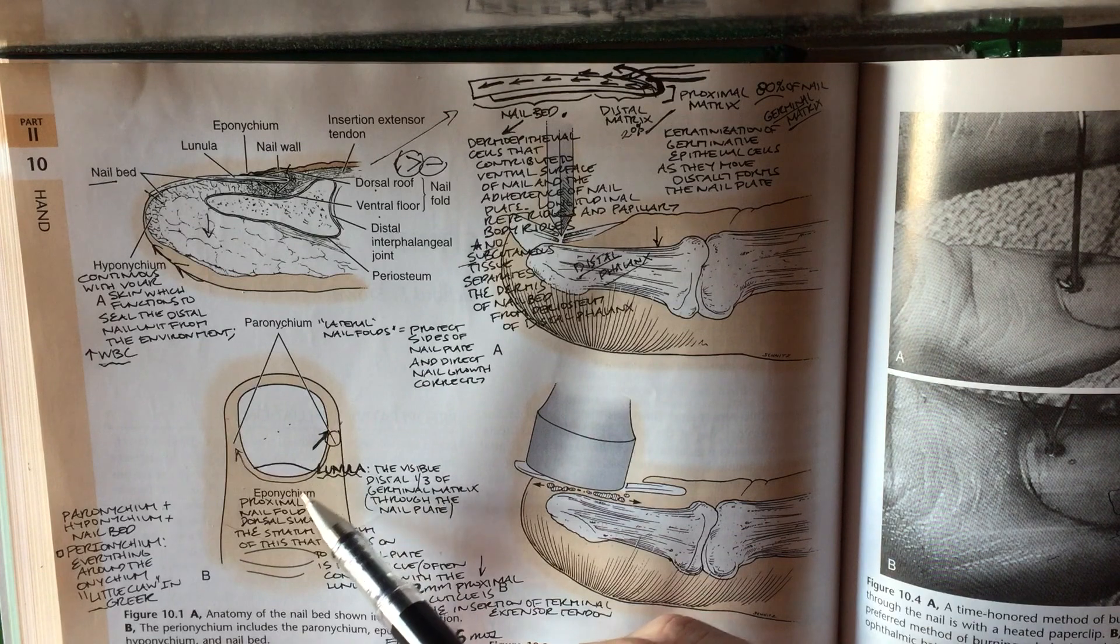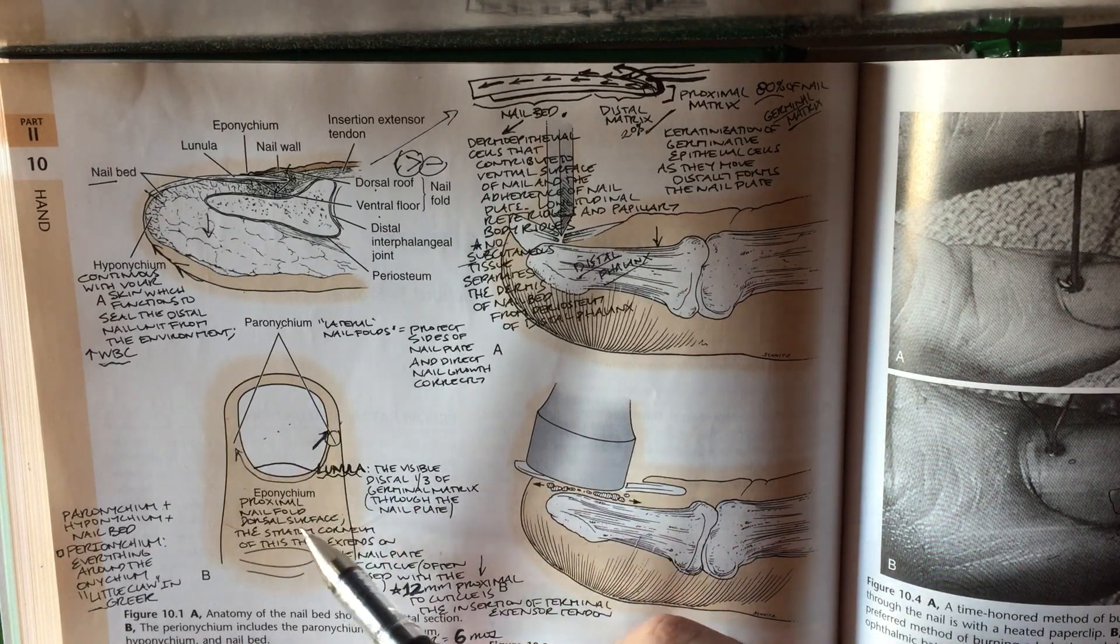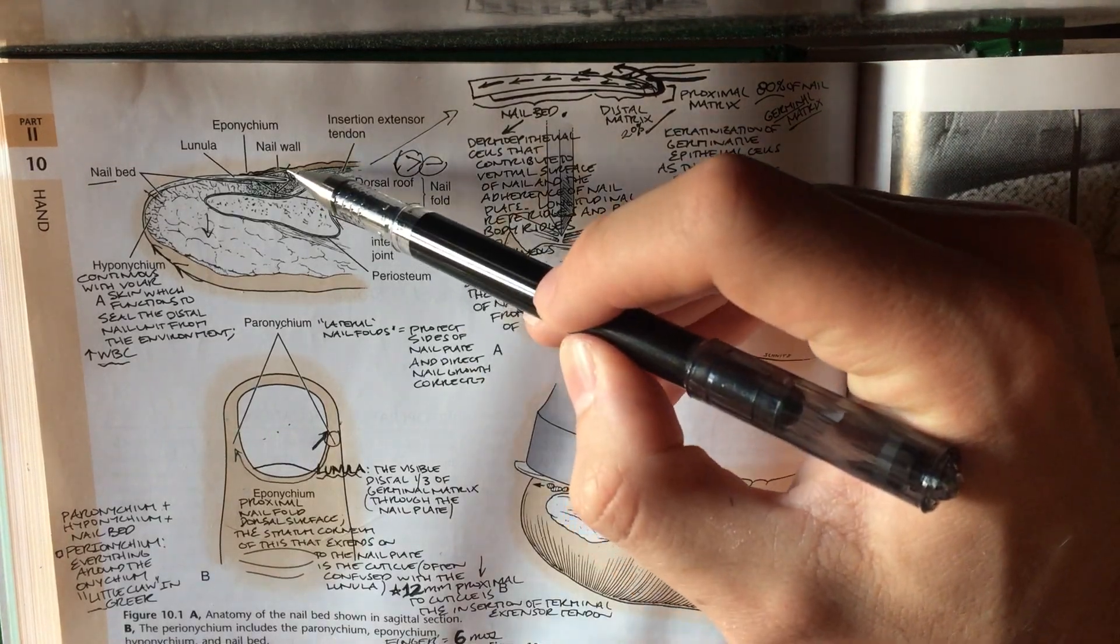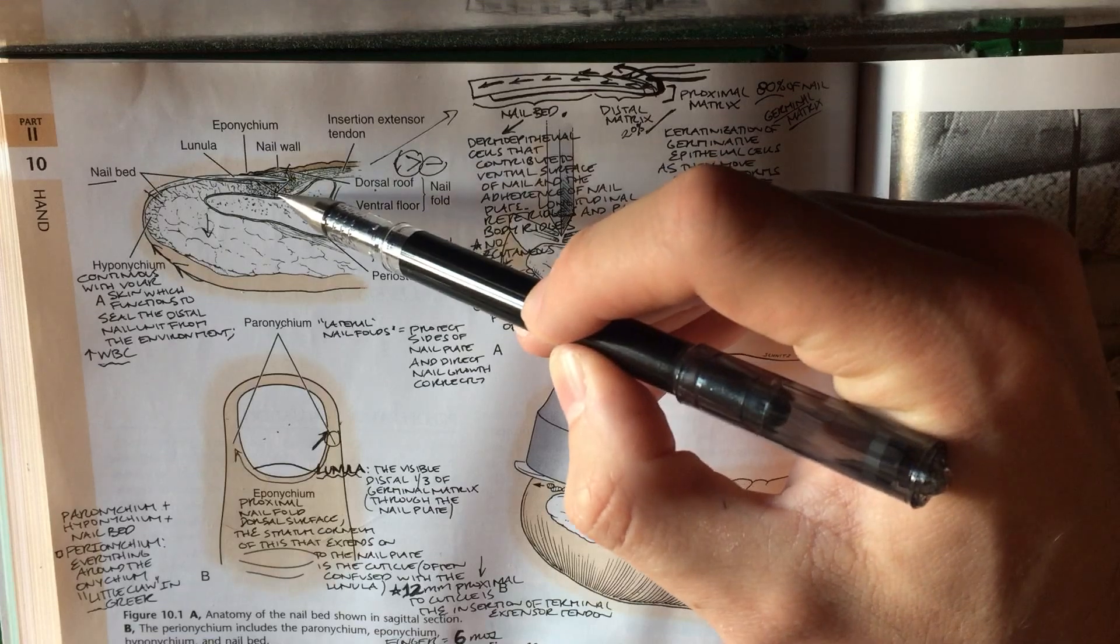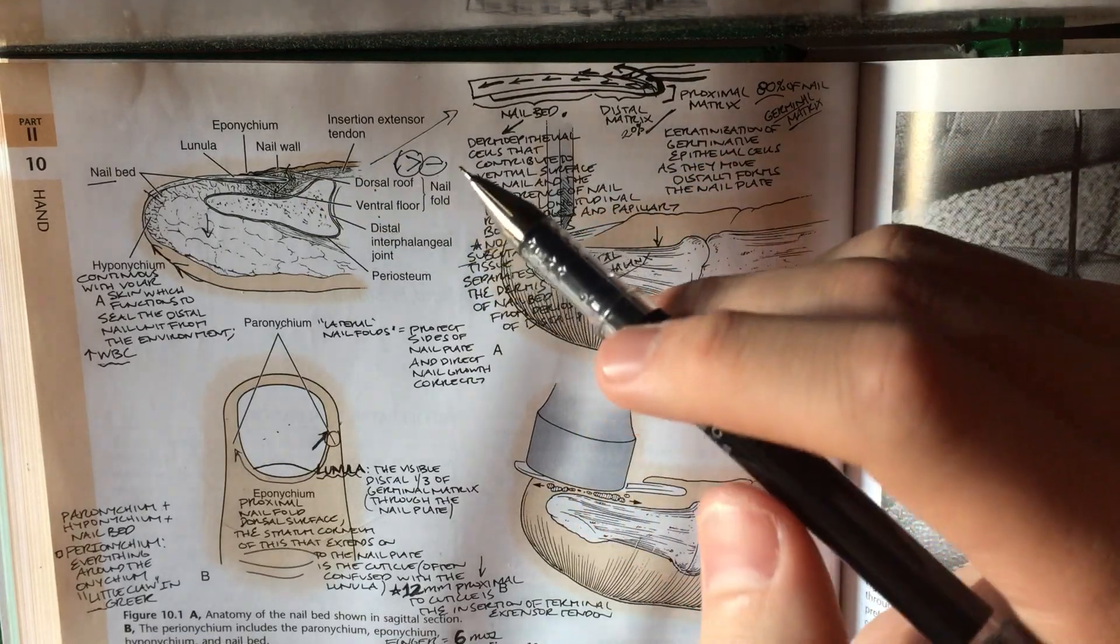Around the perionichia, you can see that there's an extension that's more proximal called the eponichium. This is the proximal nail fold, it has a dorsal and ventral surface. As you can see here from the sagittal view, the dorsal roof and ventral roof kind of provide a little home for the germinal matrix.